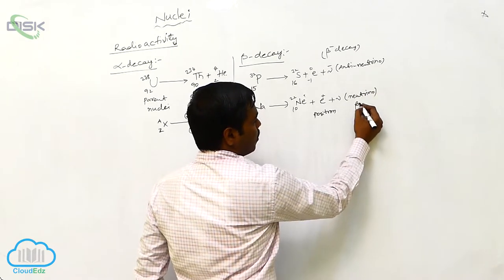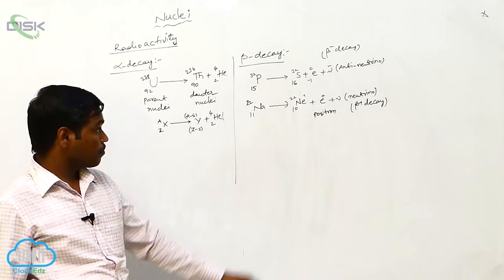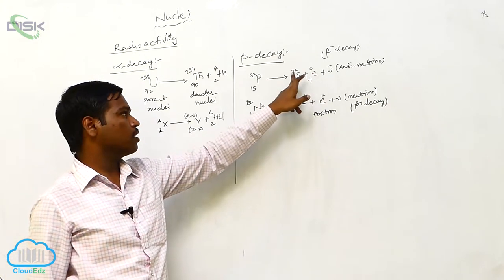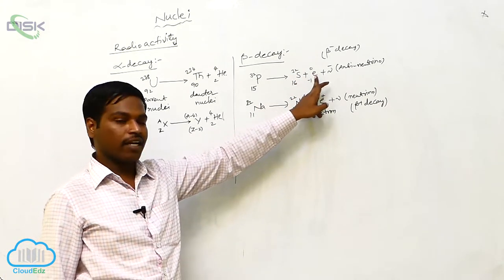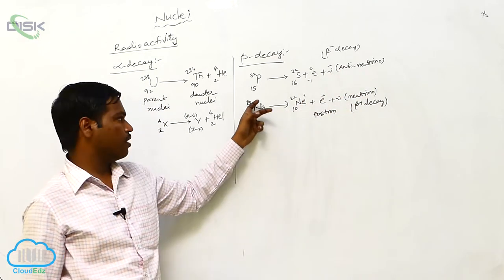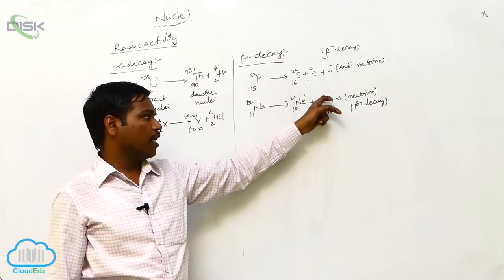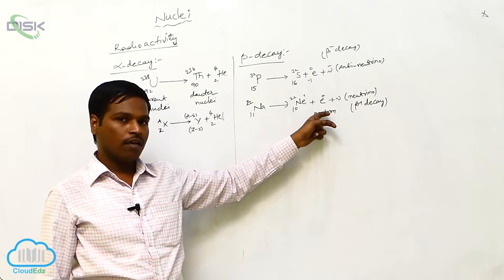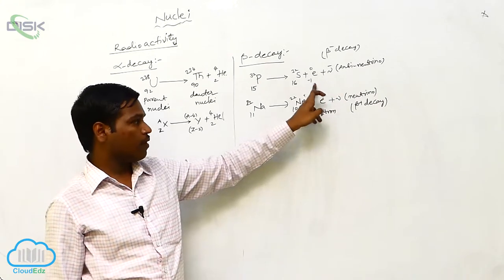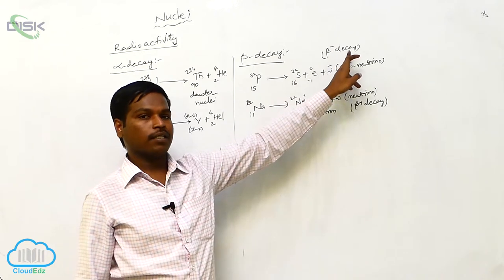This is a beta plus decay. In this beta decay, phosphorus-15-32 decays into sulfur-16-32, giving an electron plus antineutrino. And sodium-11-22 gives neon-10-22 plus one positron, which has the same mass number and opposite charge to the electron, plus a neutrino. This is called beta plus decay, and the other is beta minus decay.